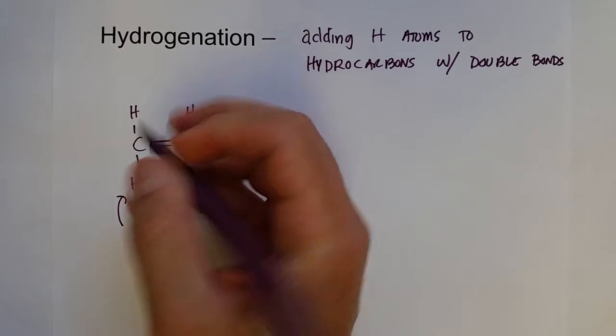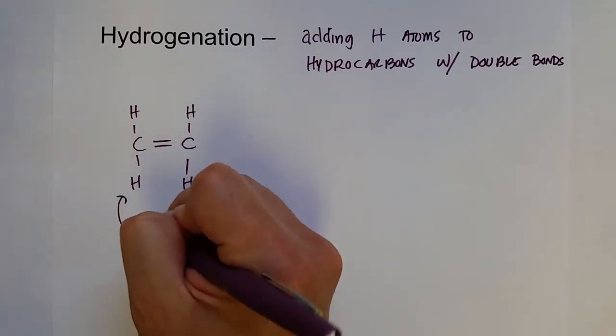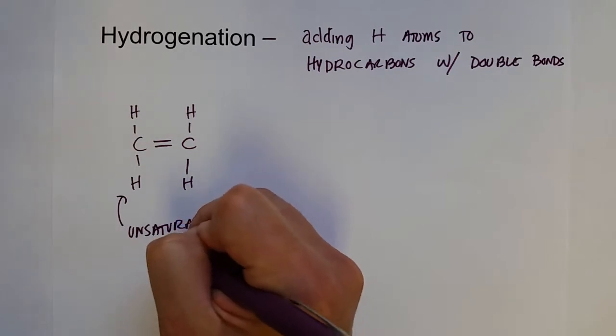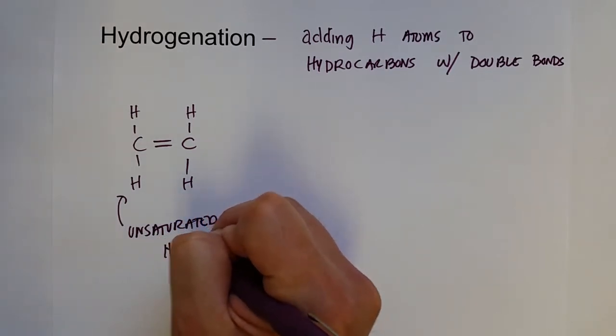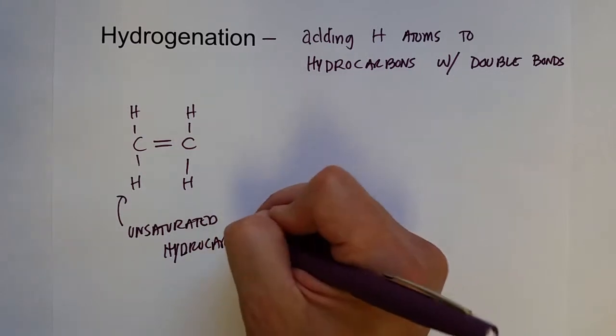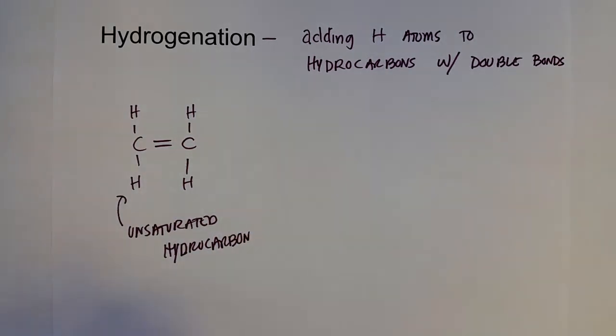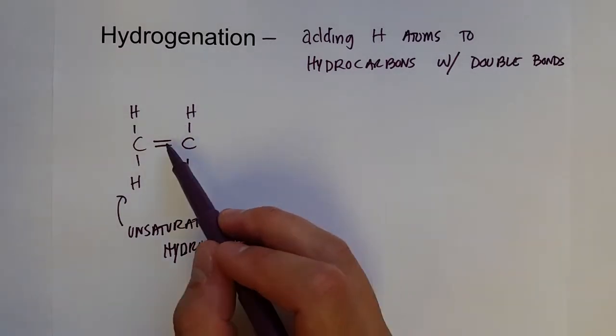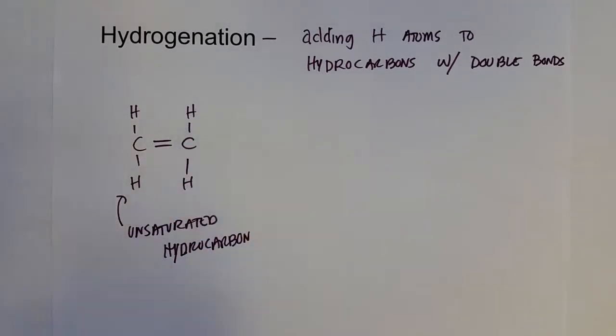There are more hydrogens that can be put on this molecule. We see that each carbon is only bonded to two hydrogens, whereas we know if we got rid of this double bond, we could add more hydrogens, and hence it is unsaturated.